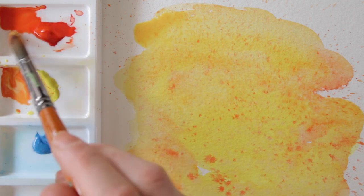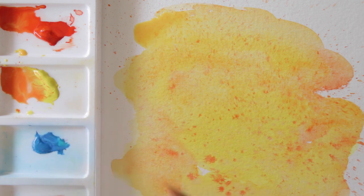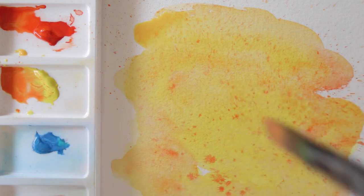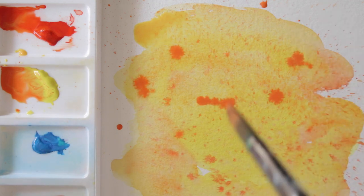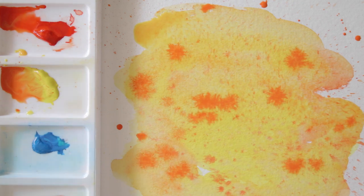For bolder splashes, use a wet brush, let it soak up more paint, and hold it above your paper. Then tap it down so it releases drips that fall onto your paper. The wetter your paint and brush, and the higher you hold it, the larger the drops will become.